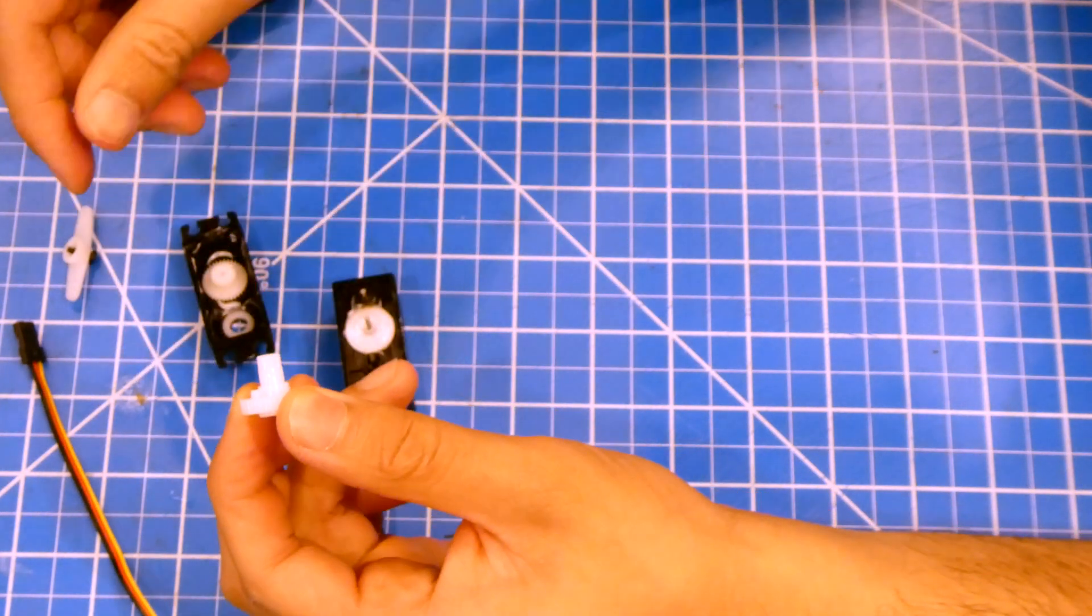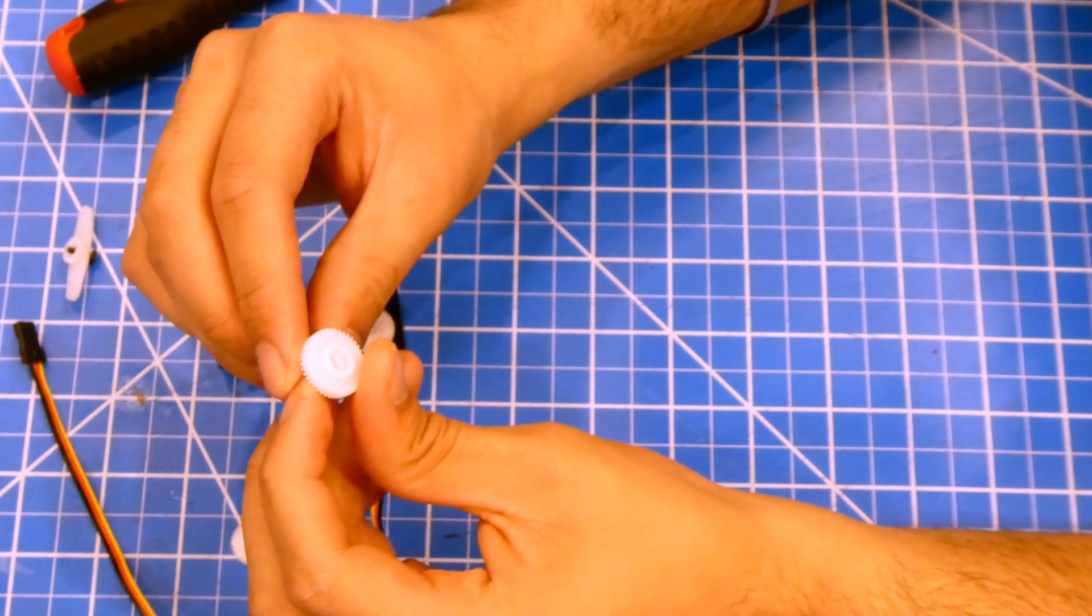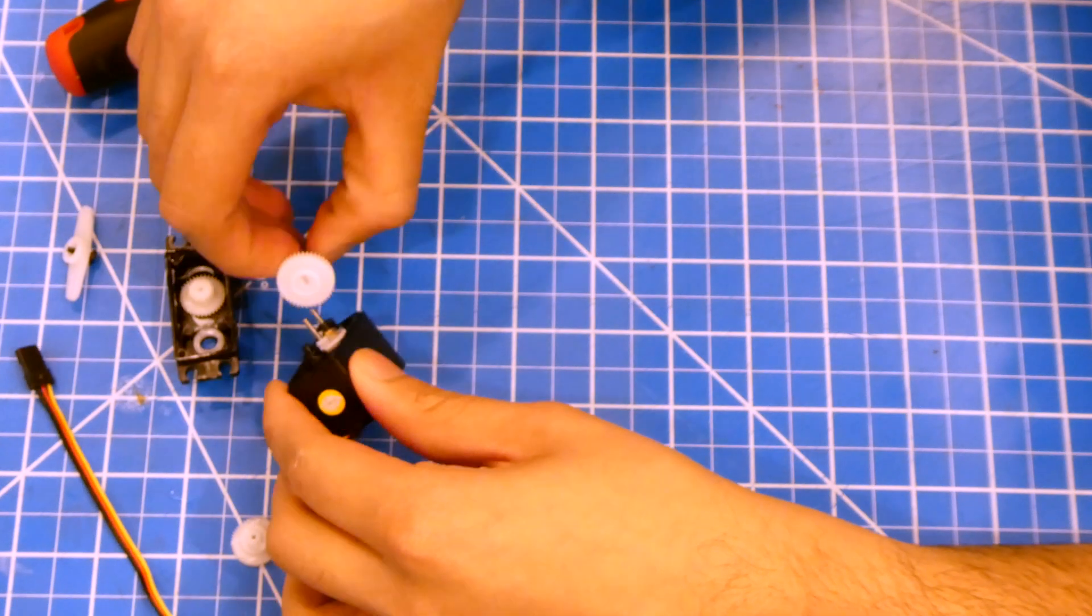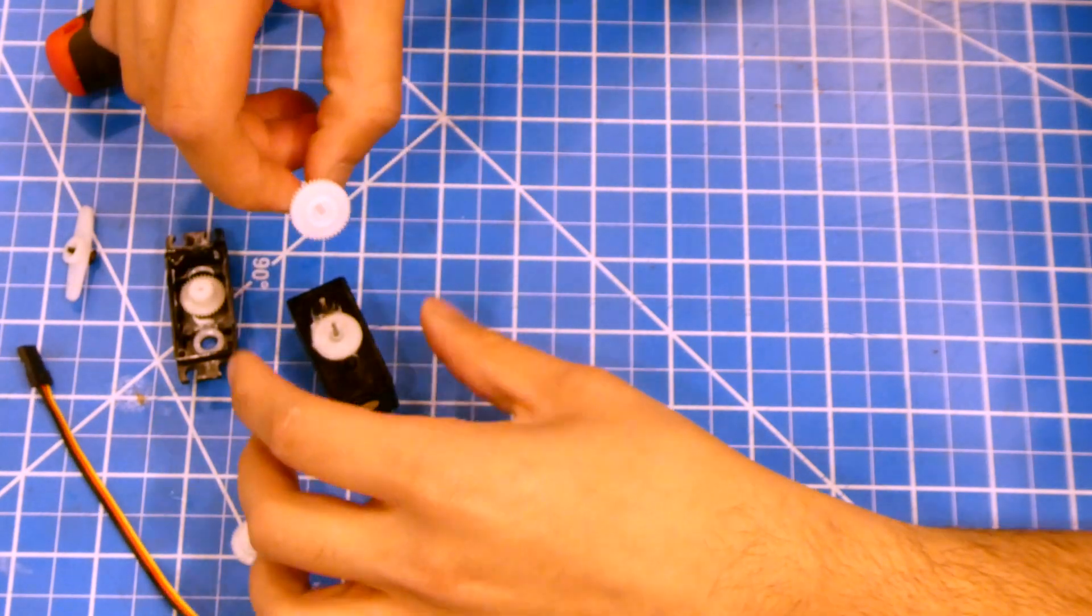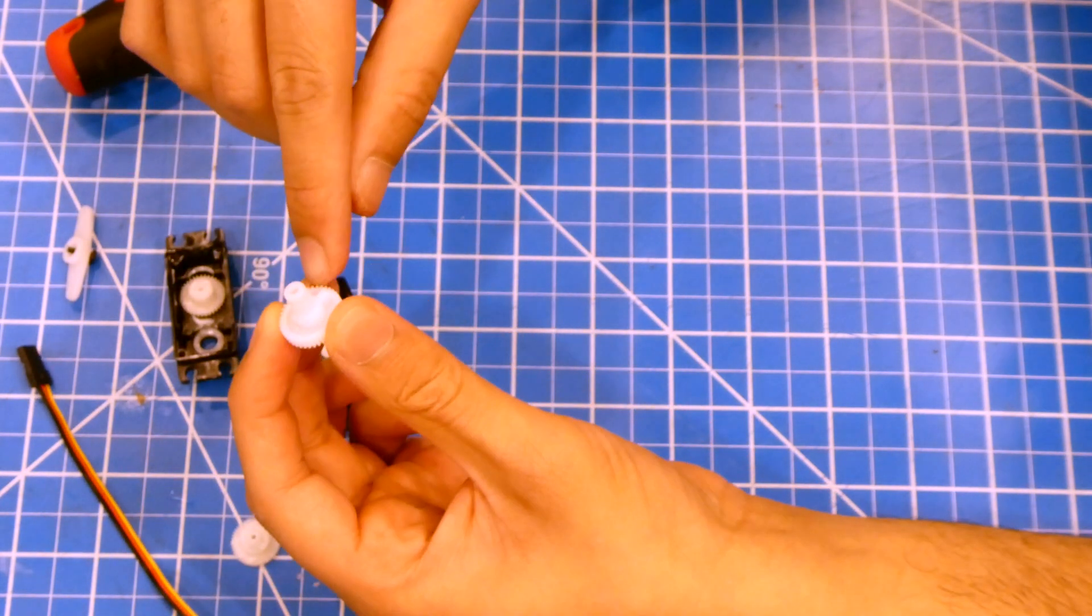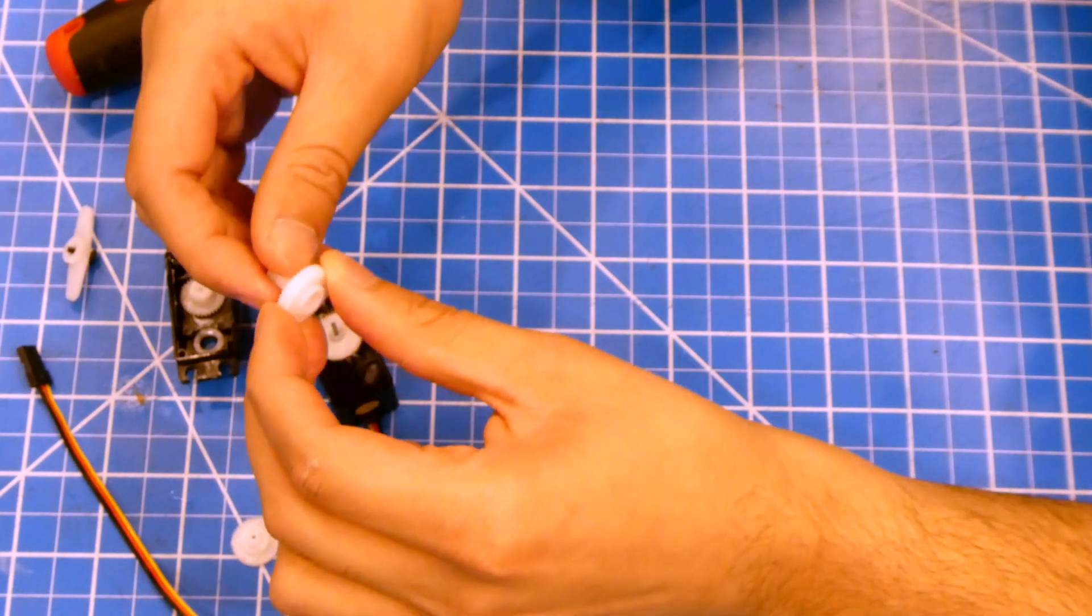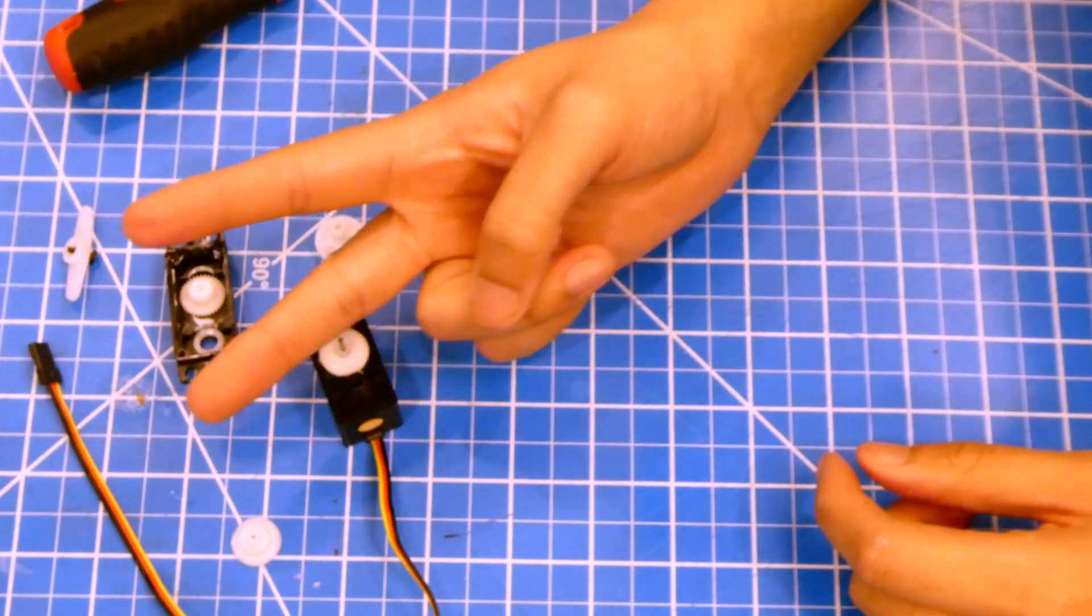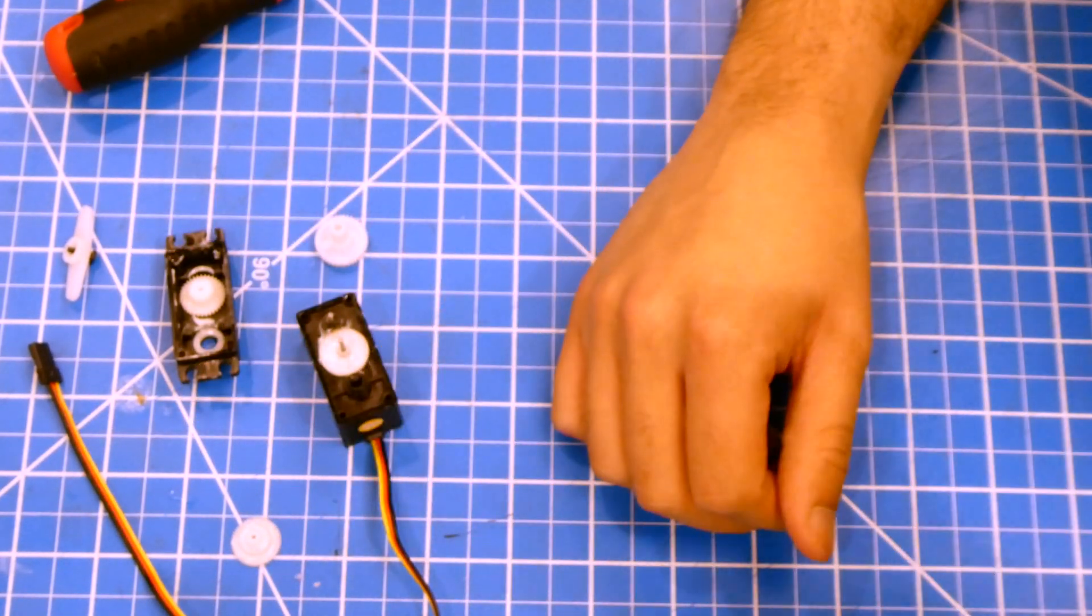So we need to grind that away pretty much, and then grind this tip away so that these two don't mate anymore. So then this can spin freely and won't have the stopping block, as well as it won't mate to this and it won't ever turn it. So those are the two things we need to finish once you get that. We'll be good.